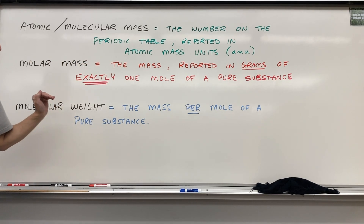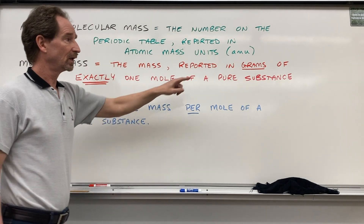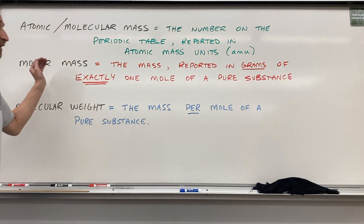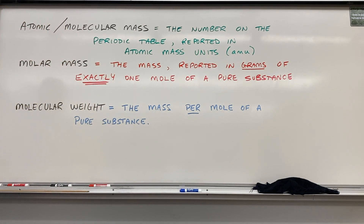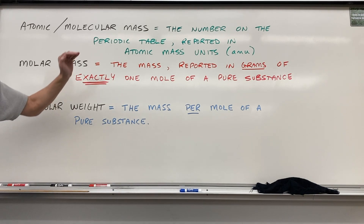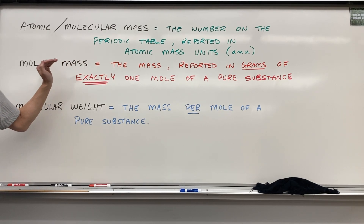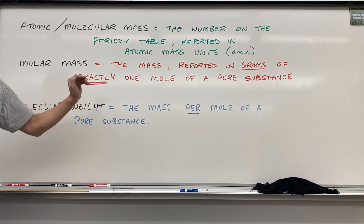The second is called molar mass, and a molar mass is the mass reported in grams — the mass in grams of exactly one mole of a pure substance. The molecular mass and the molar mass will be the same number, but in the first case we report the answer in atomic mass units, and in the second case we report the answer in grams.